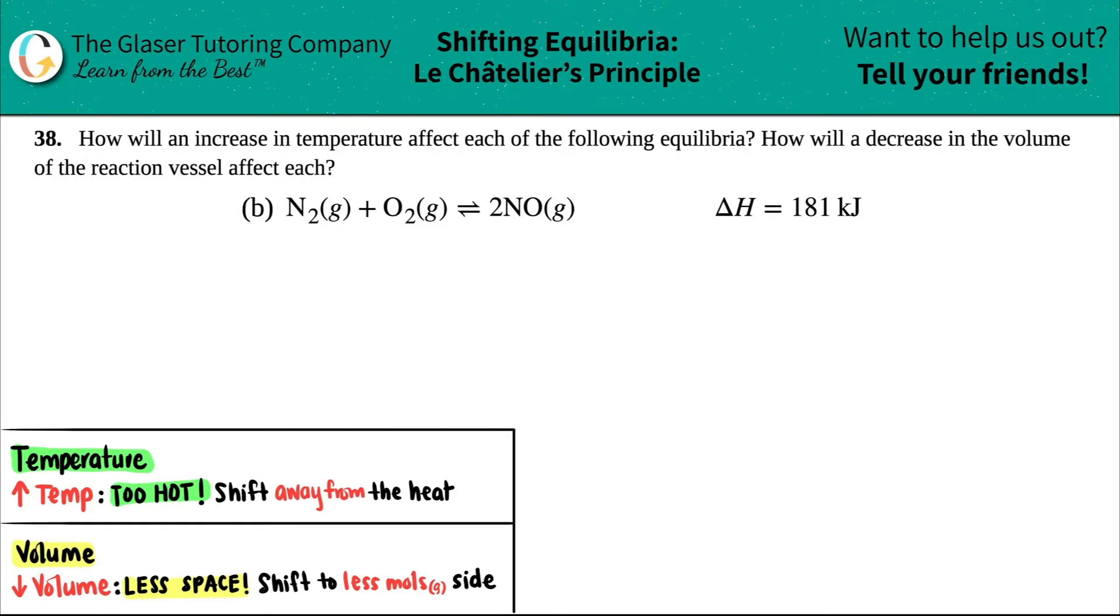Number 38: How will an increase in the temperature affect each of the following equilibria and how will a decrease in the volume of the reaction vessel affect each? And then we have letter b out of the bunch.